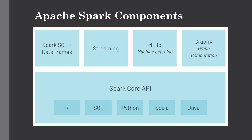The next component is MLlib, which handles machine learning. Apache Spark has the capability to perform machine learning operations on your data, delivering both efficiency and high-quality algorithms. It has become a top choice for data scientists because it provides in-memory computation — caching data into memory for faster execution — which offers significant performance benefits.